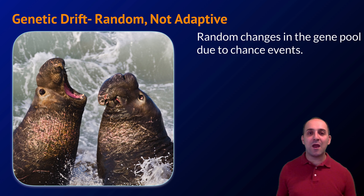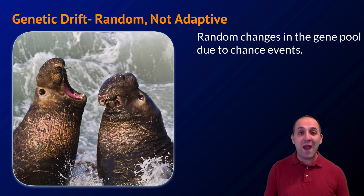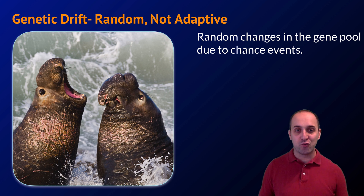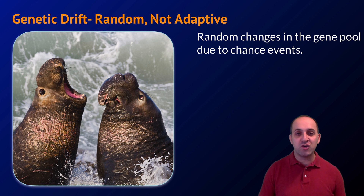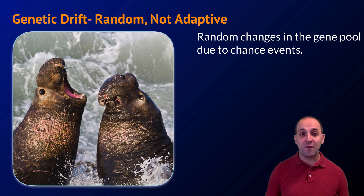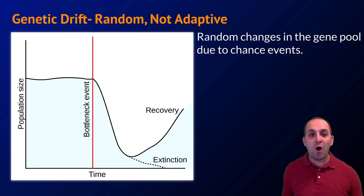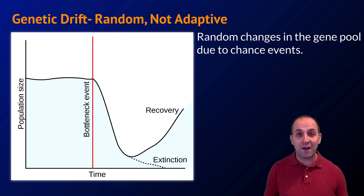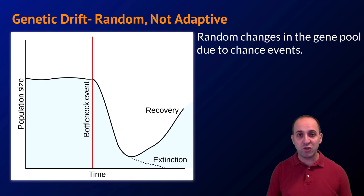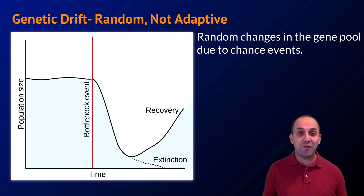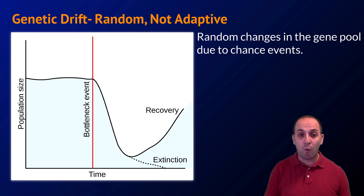Natural selection and sexual selection are non-random processes. There are also random processes that drive evolution — random, not adaptive change is referred to as genetic drift. This is just random changes in the gene pool due to chance events. Our mascot for genetic drift is the elephant seal, a population hunted almost to extinction until legally protected. This is often called a bottleneck event — something that greatly and randomly reduces the number of individuals. If the population recovers, it will frequently have allele frequencies very different from the population that existed before the bottleneck.